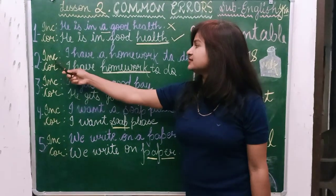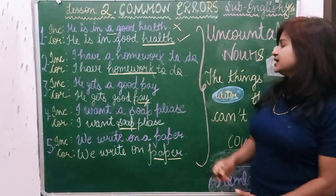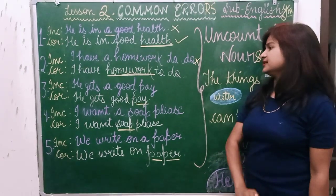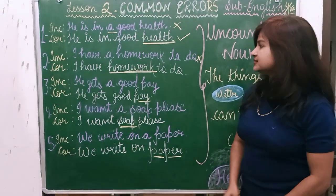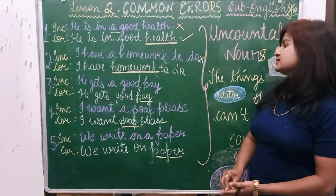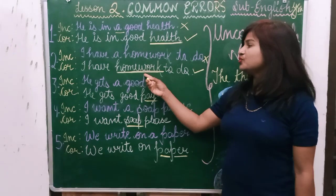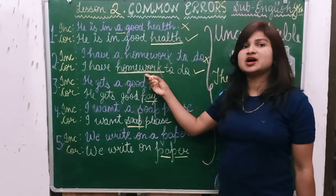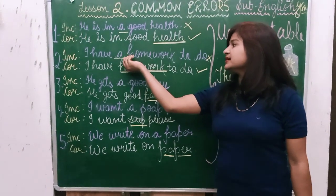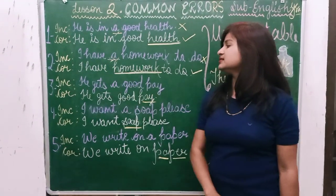Incorrect: 'I have a homework to do.' This is also incorrect — it is a wrong sentence. The correct sentence is: 'I have homework to do.' This is the correct sentence. Homework is an Uncountable Noun, therefore we do not use article 'A'. It would be an error to do so.